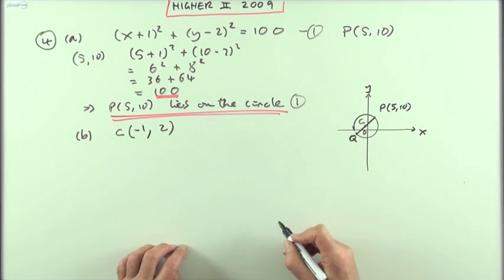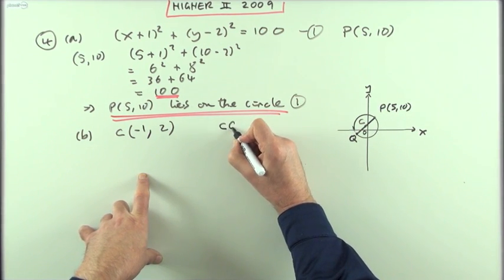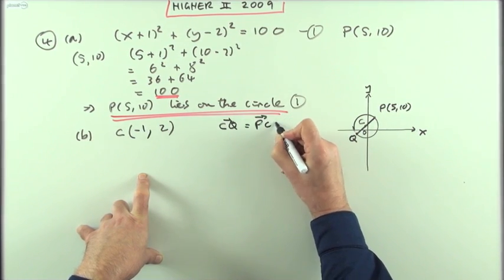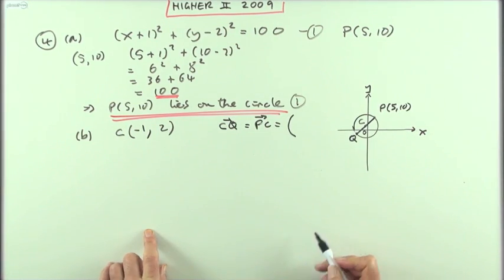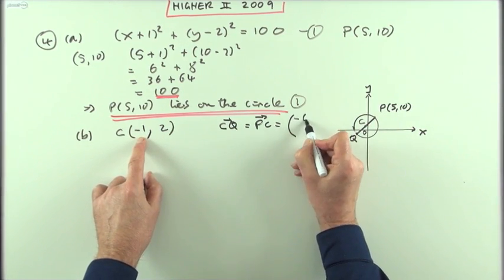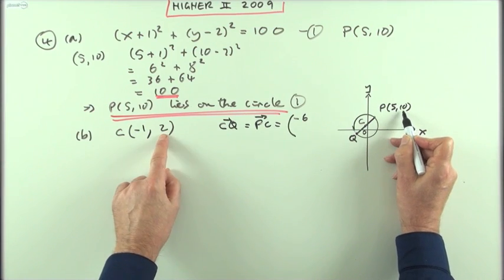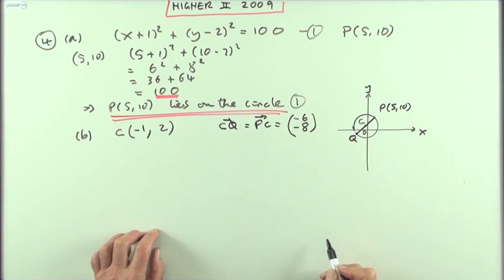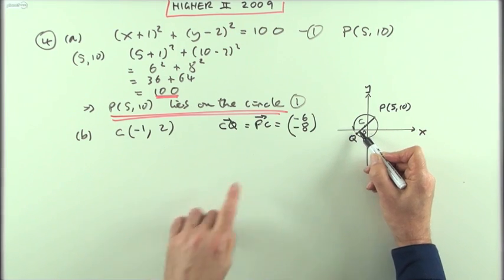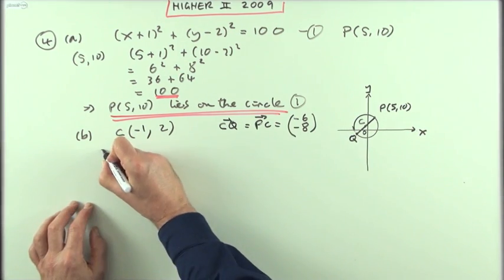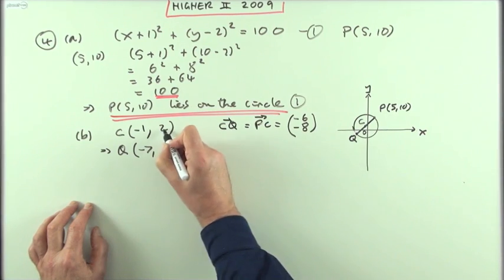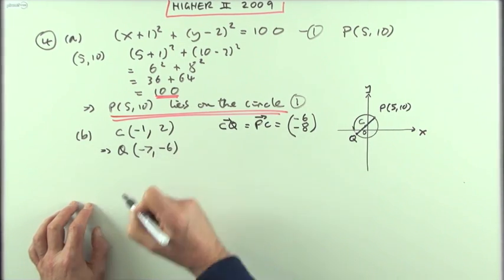You could say how'd you get from P to C, it'll be the same to get from C to Q. So to go from C to Q is the same as to go from P to C. How'd you go from P to C? From 5 to -1 you have to go back 6, from 10 to 2 you have to go down 8. Which means that going from C to Q will be take off 6 and take off 8. So that means Q is going to be, removing 6 from that's -7, removing 8 from that, it's going to be -6.